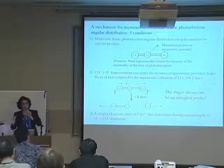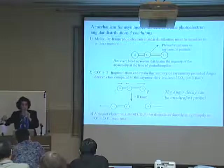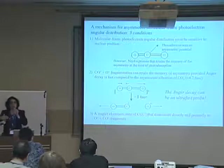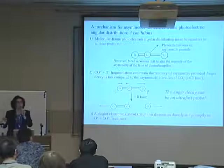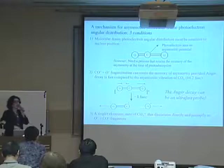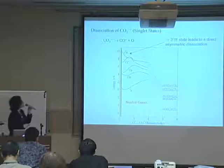Third, the molecule needs to dissociate promptly and directly, because otherwise, if we give the molecule time to rotate and tumble and vibrate, it will certainly lose that information. The third step of our calculation was to verify this hypothesis by finding whether such a state actually existed. We found a triplet singlet pi state that is directly downhill, which proves that at least the third condition could be met.